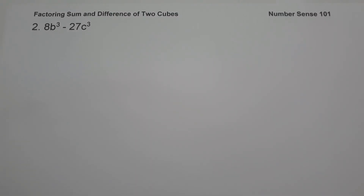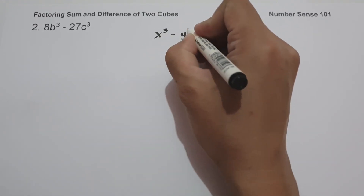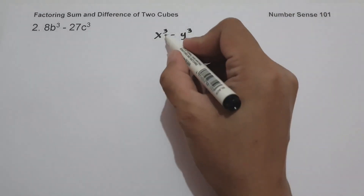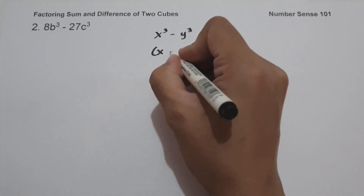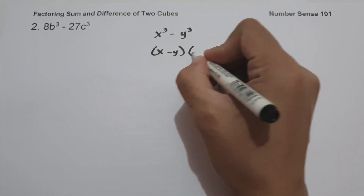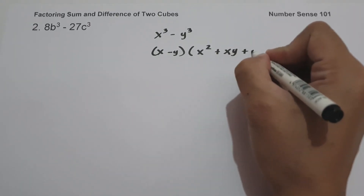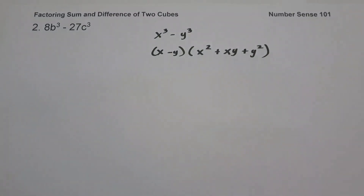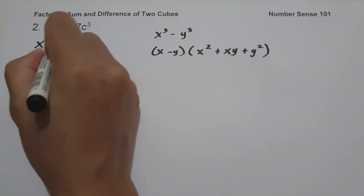Number two: we have 8b³ − 27c³. As you can see, this is written in the form of x³ − y³, and x³ − y³ = (x − y) times the quantity x² + xy + y². So let us identify the values.